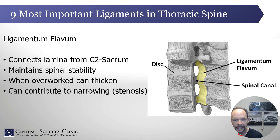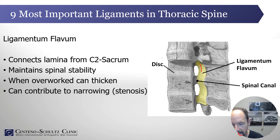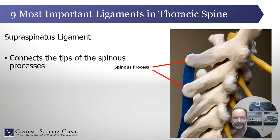The next one is the ligamentum flavum. Like the anterior and posterior longitudinal ligament, it starts on the cervical spine and extends all the way down. It provides critical stability, but when it is overworked as a result of instability this ligament can become thickened — and that's not a good phenomenon because it can contribute to narrowing of the canal, otherwise known as stenosis.